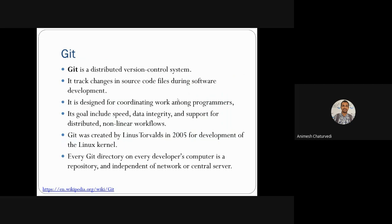Git is one kind of distributed version control system which is very famous. It tracks source code files during software development and coordinates among many programmers or developers working together on a project. The goals of Git include speed, data integrity, support for distributed systems, and nonlinear workflow — meaning anyone can develop anywhere and push the code.